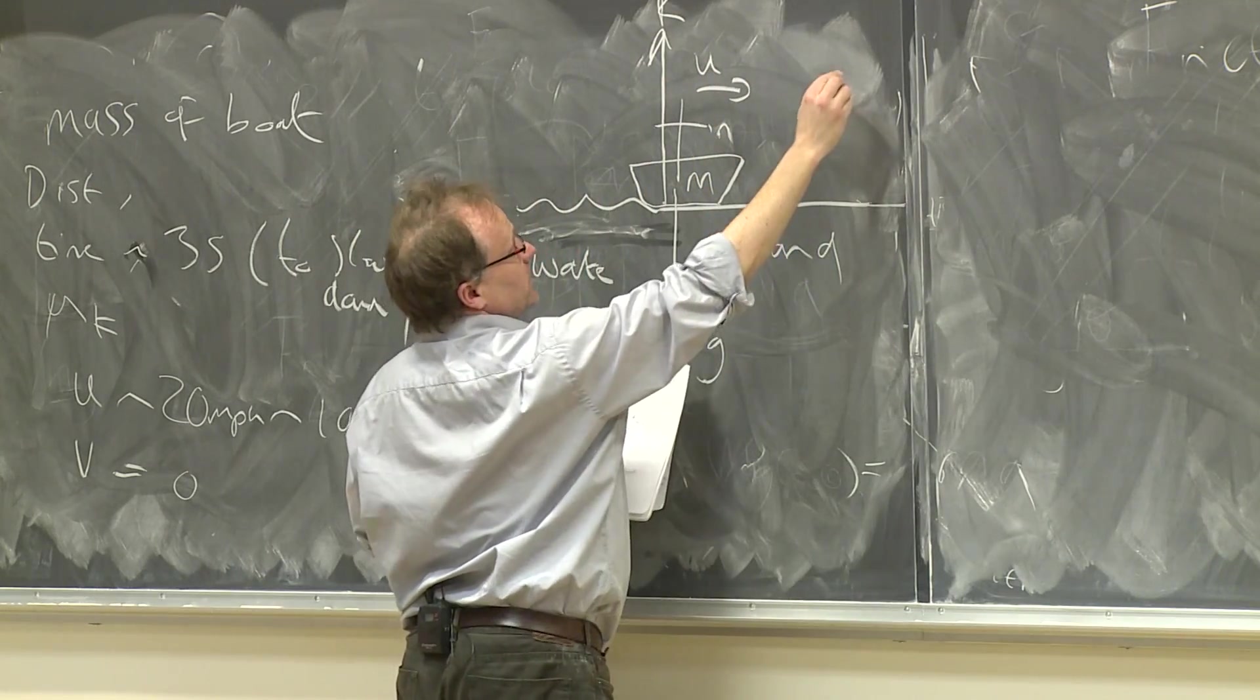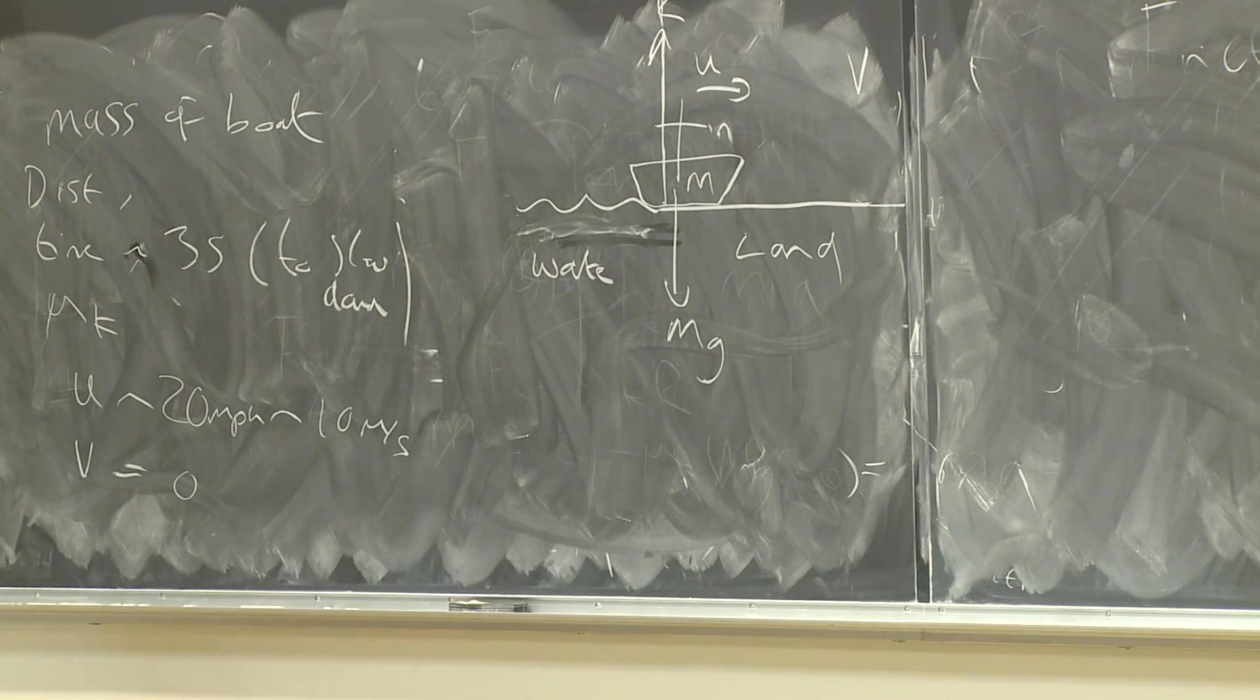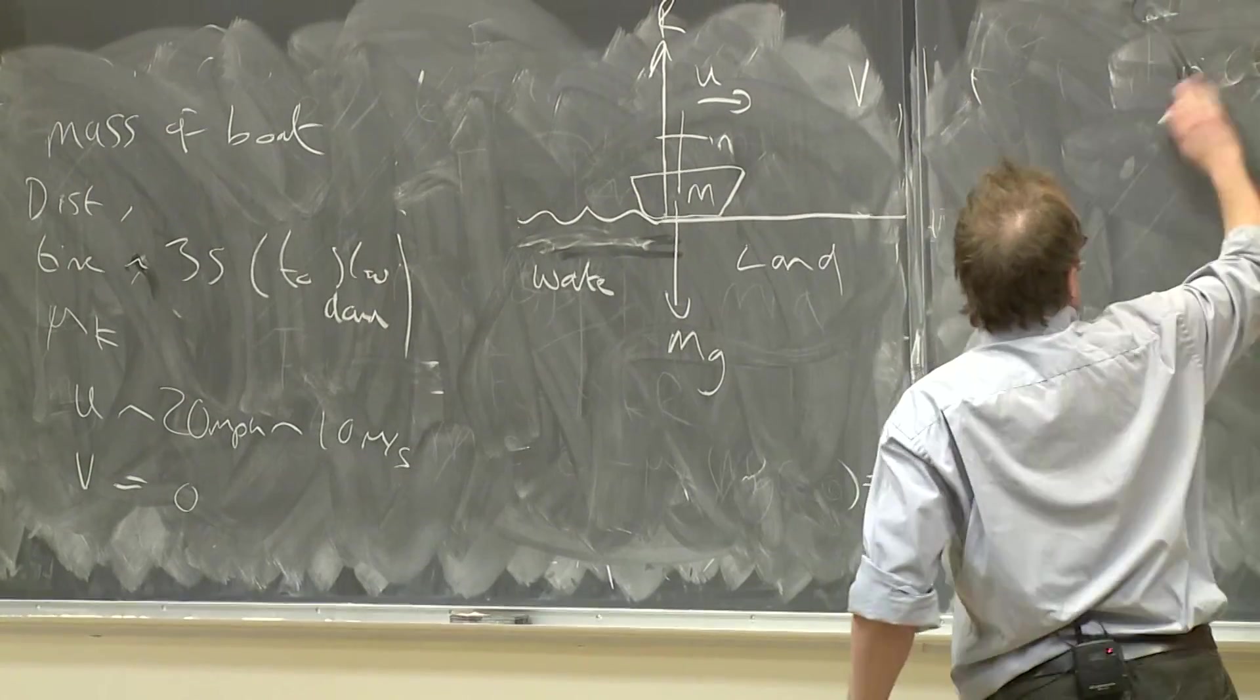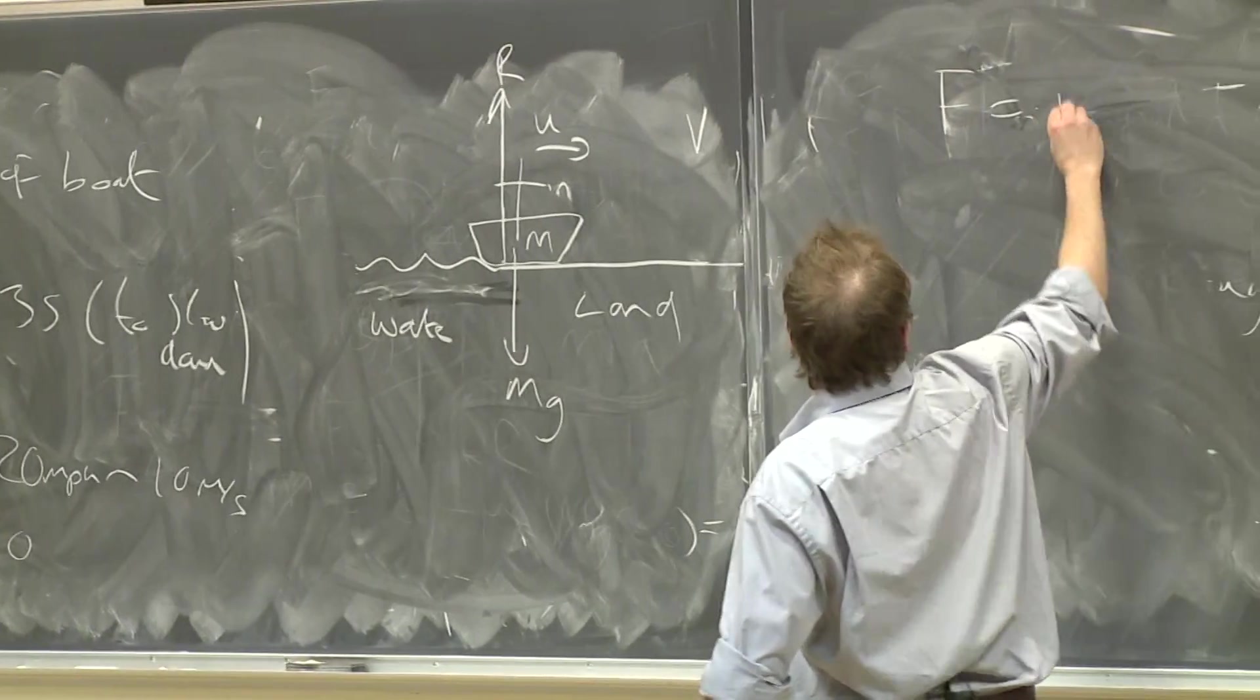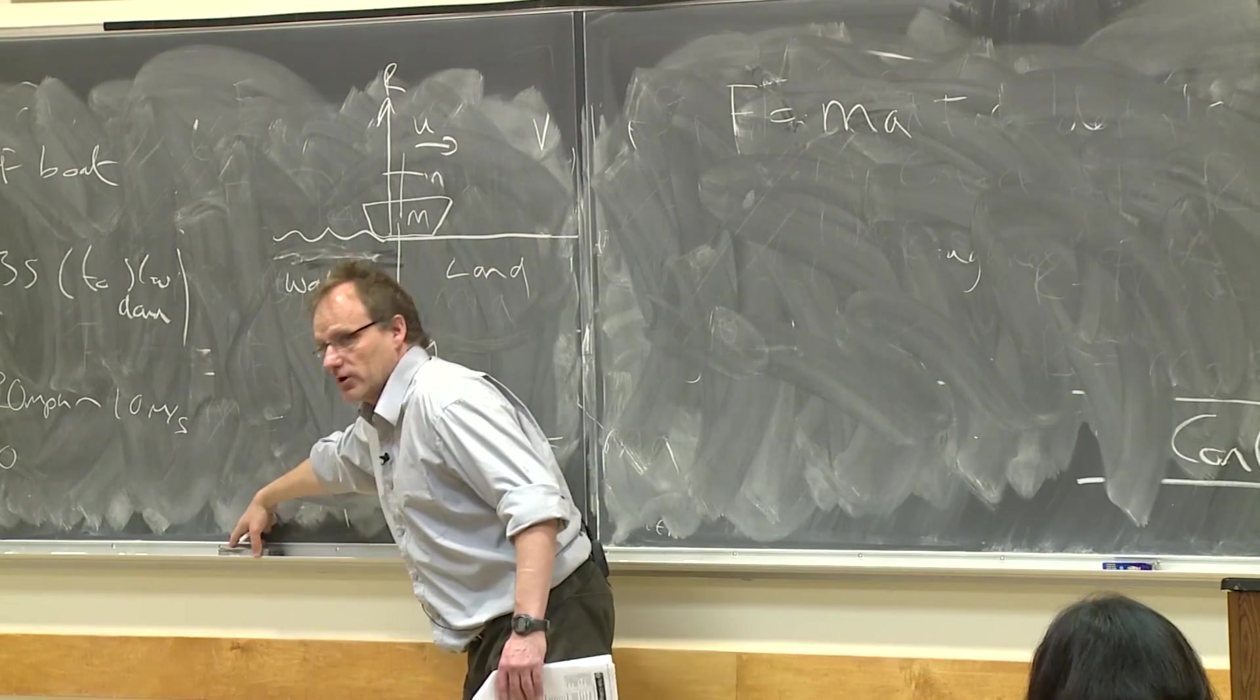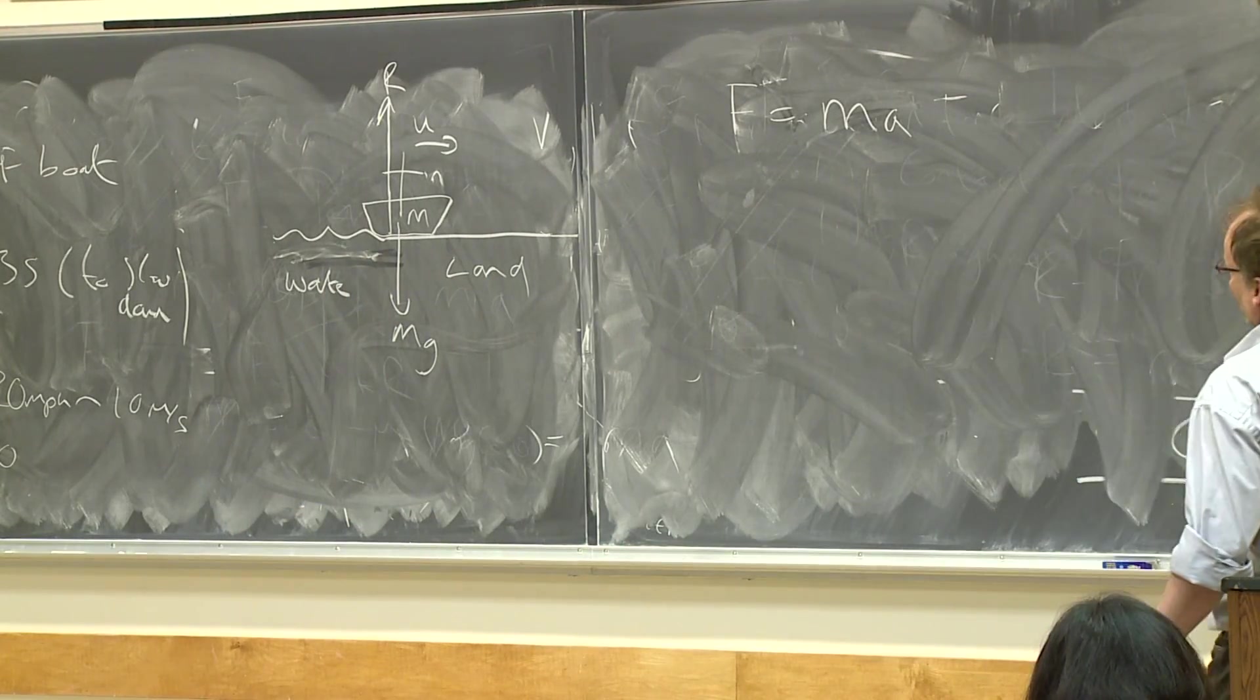And it has a speed U and it goes a certain distance or for a certain time and we get a velocity V. So let's write down Newton's second law: F equals ma. If we do it horizontally, because the vertical equation tells us nothing.